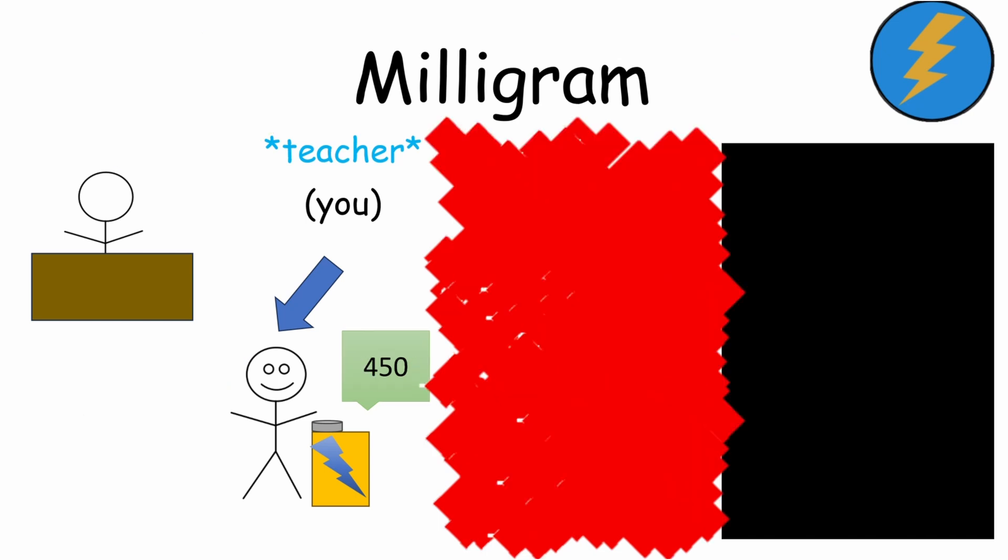And more and more mistakes until you finally press 450 volts. Another mistake. You press again. The machine says, danger, severe shock. You hear an even louder scream from the room.